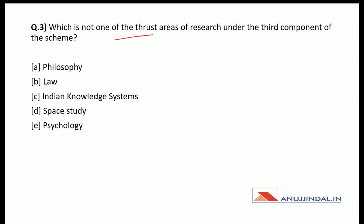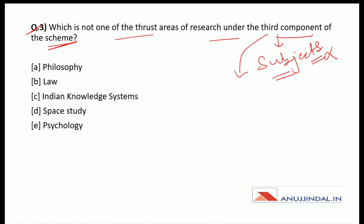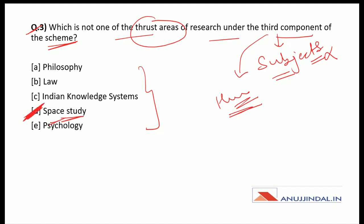Question number three: Which is not one of the thrust areas of research under the third component of the scheme? The third component is about humanities and human sciences. Space study is not a part of humanities and human sciences, so logically, option D — space study — will be the correct answer. We can solve this without knowing all subjects because the third component is clearly related to humanities and human sciences.